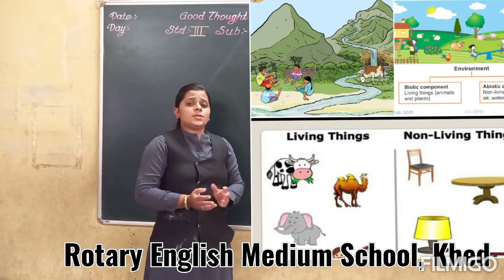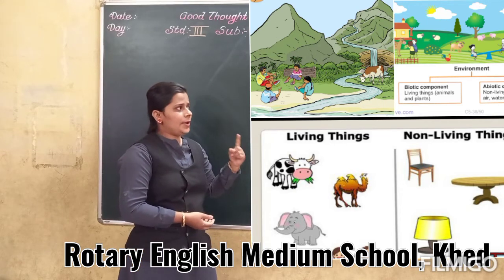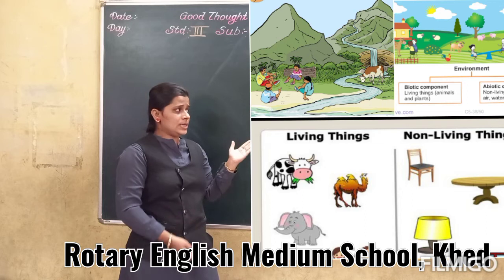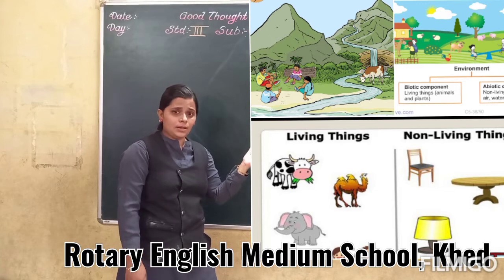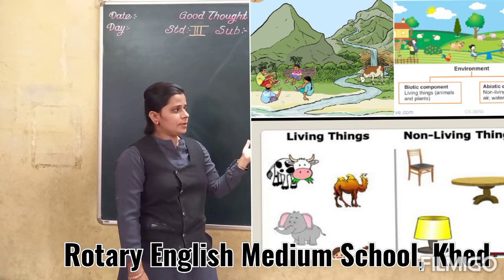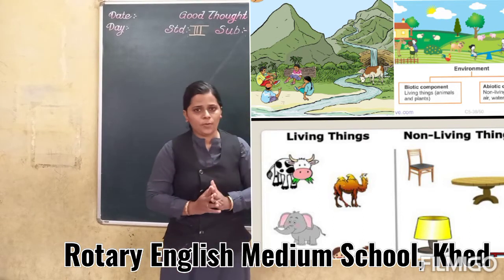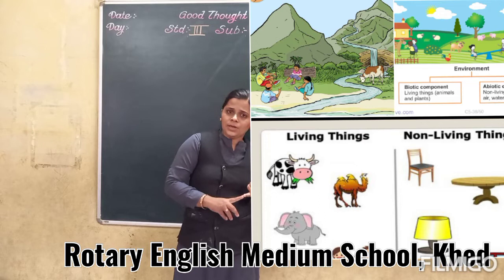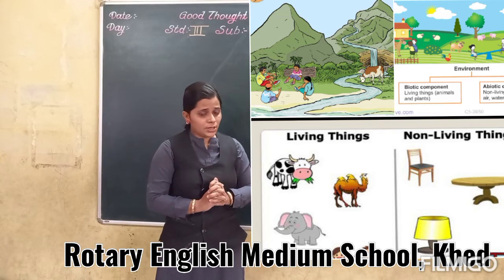So my dear children, all those living and non-living things that surround you — including houses, buildings, people, animals, land, mountains, rivers, lakes — they make your environment. These all make your environment. In short, both living and non-living things form our environment.